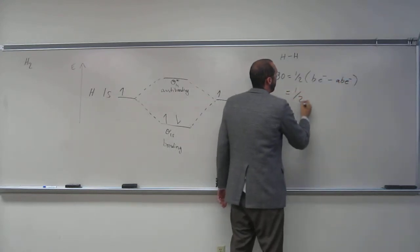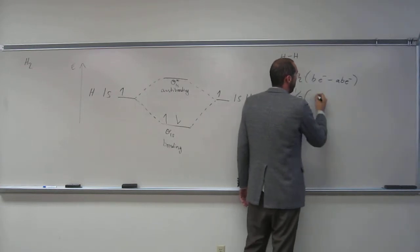So one-half, how many bonding electrons do we have? Two. Two. And antibonding? Zero. Zero.